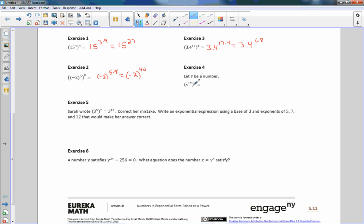Exercise 4, let S be a number. S to the power of 17 to the power of 4 is S to the 17 times 4, which equals S to the 68.